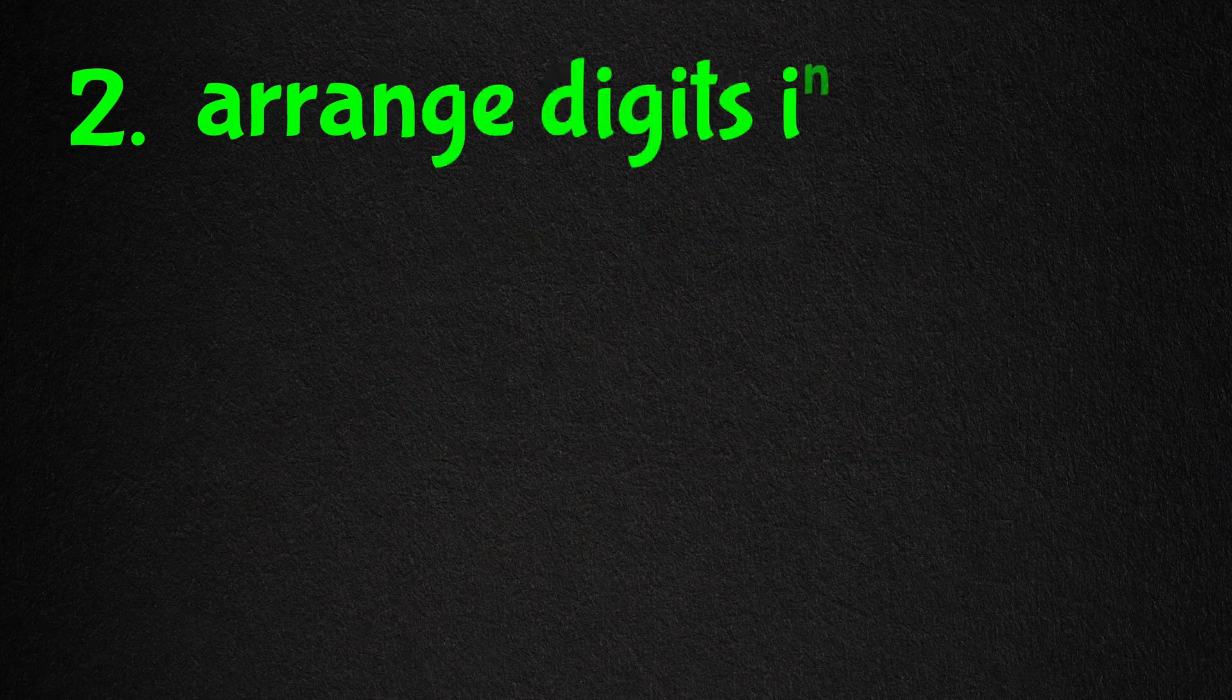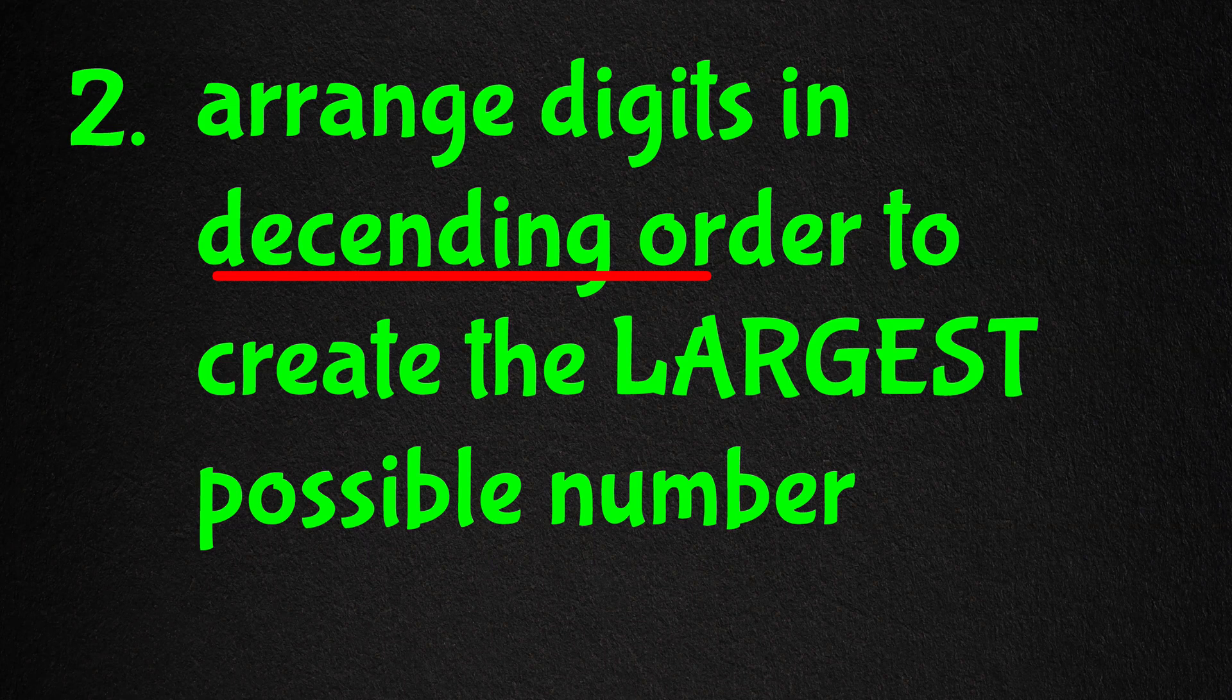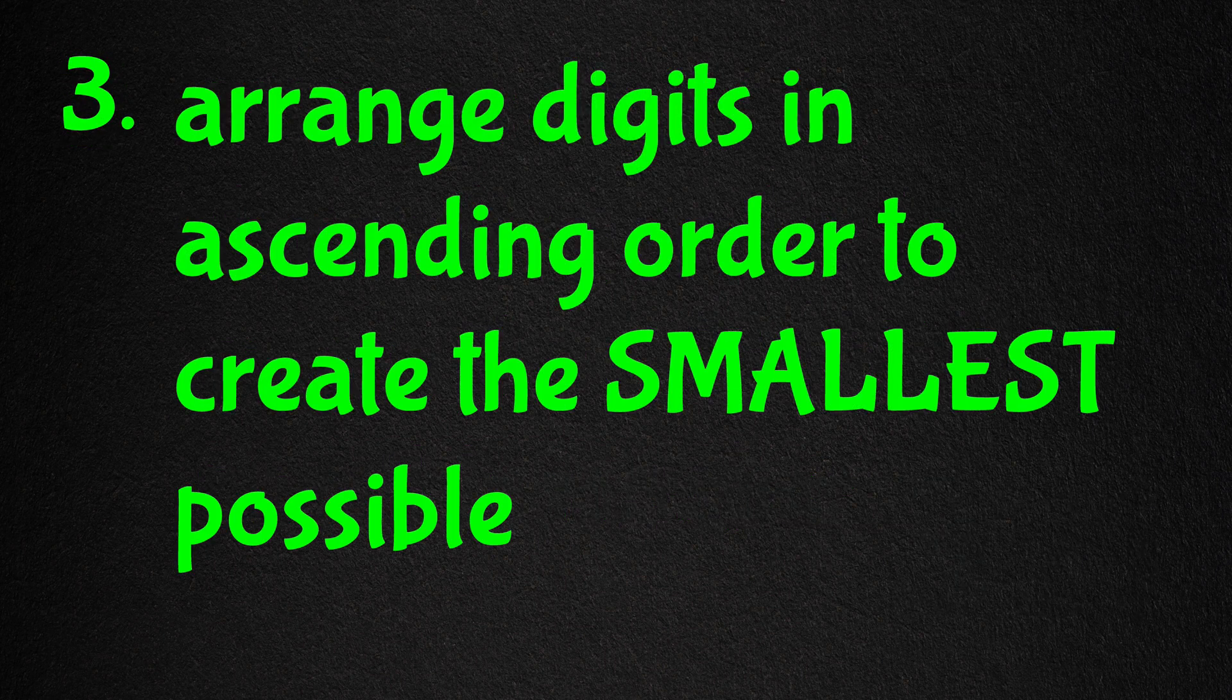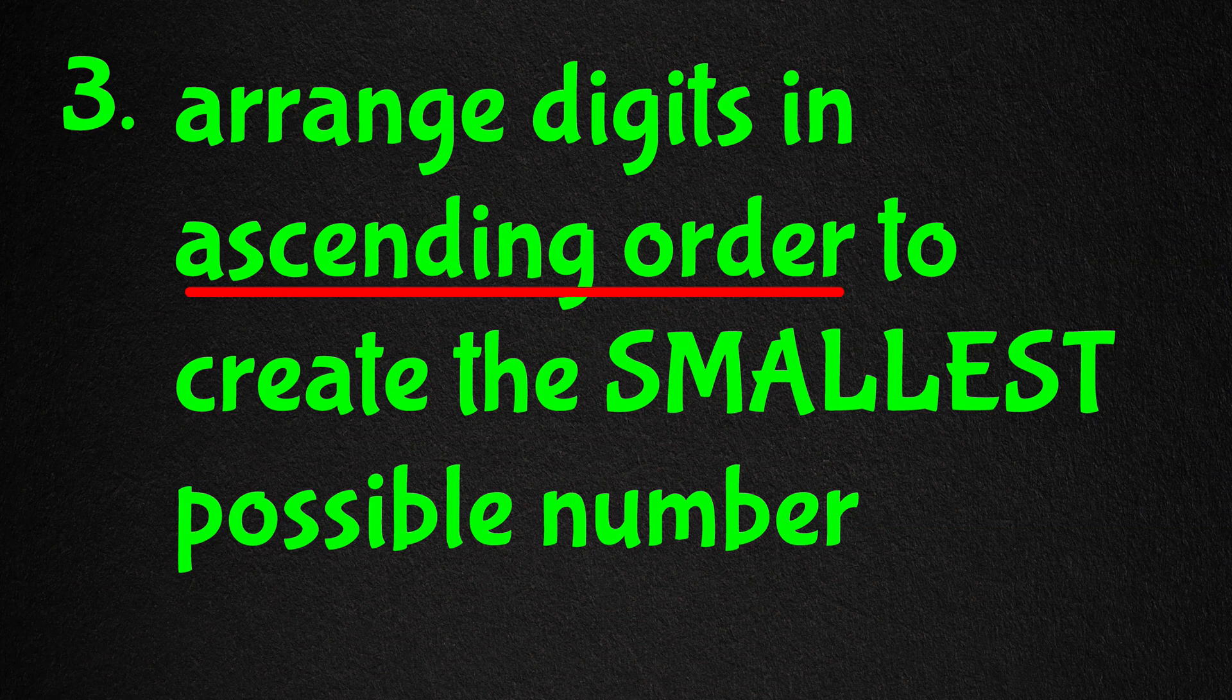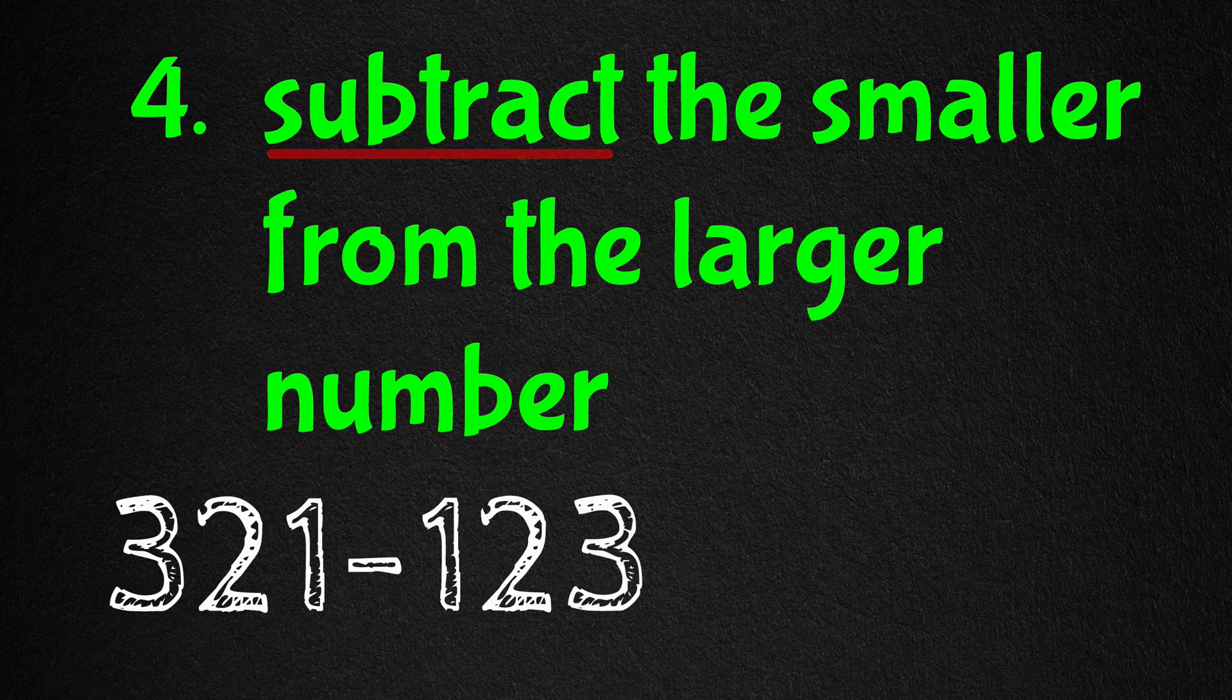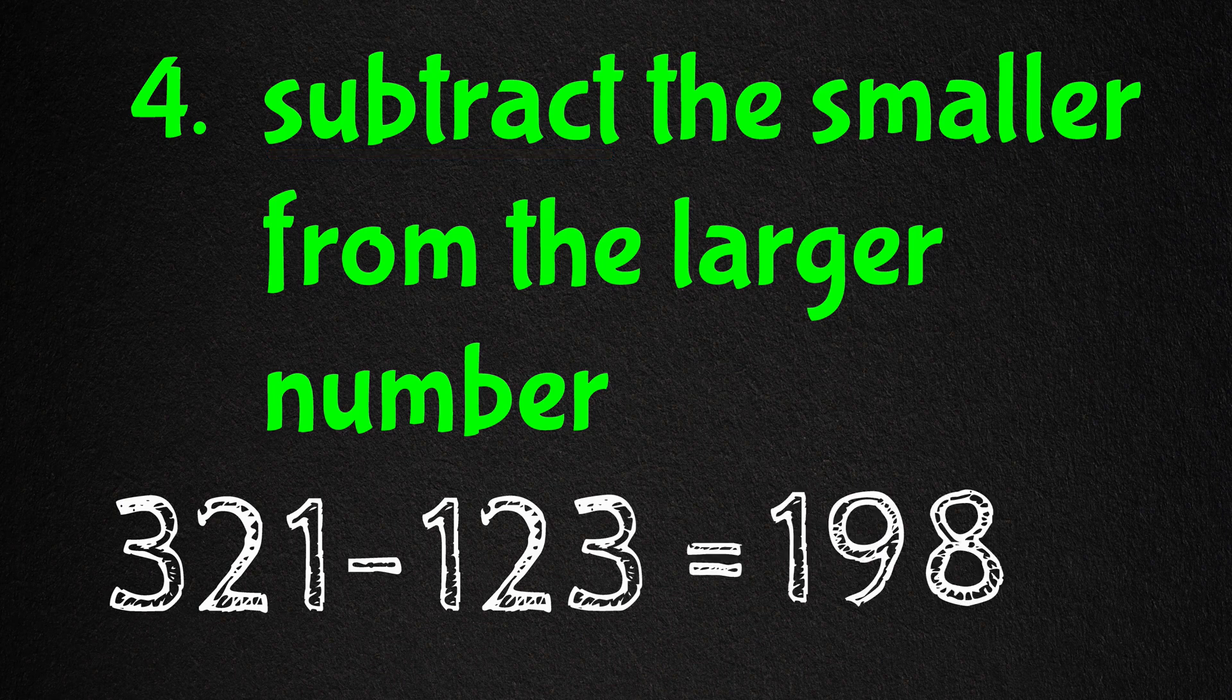Next, arrange the digits in descending order to create the largest possible number. So 321 is already arranged in descending order from largest to smallest. Next, arrange the same digits in ascending order to create the smallest possible number. So that would be 123. And then subtract the smaller from the larger. So that would be 321 minus 123, which equals 198.